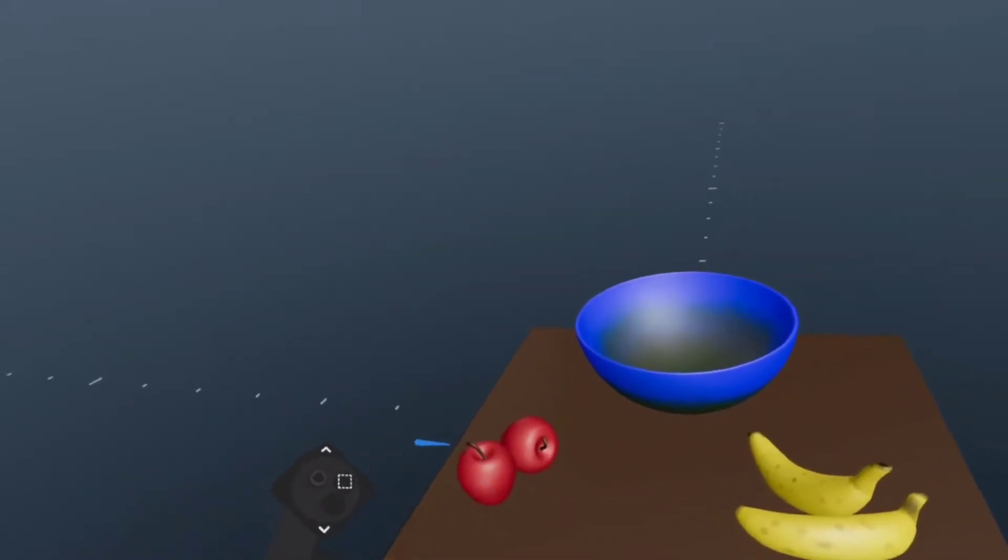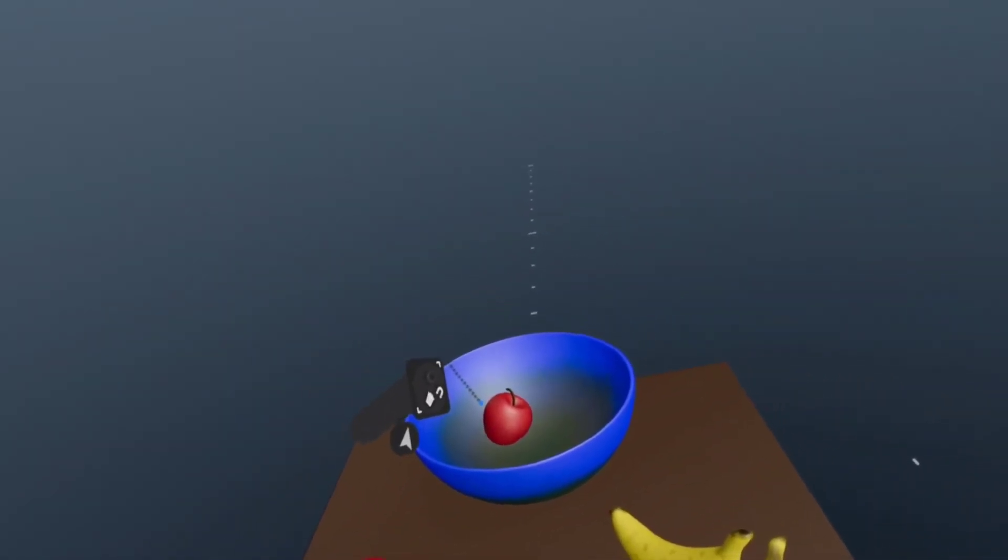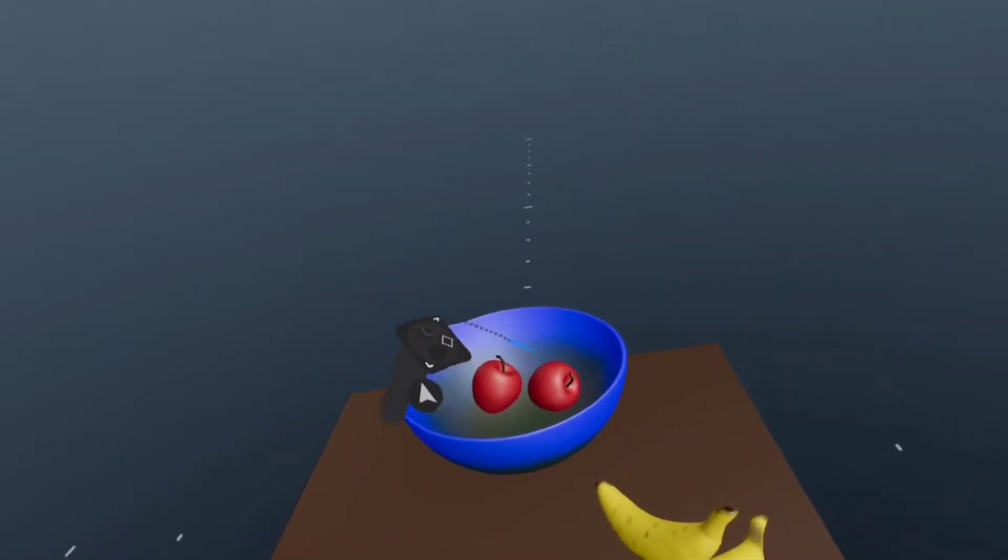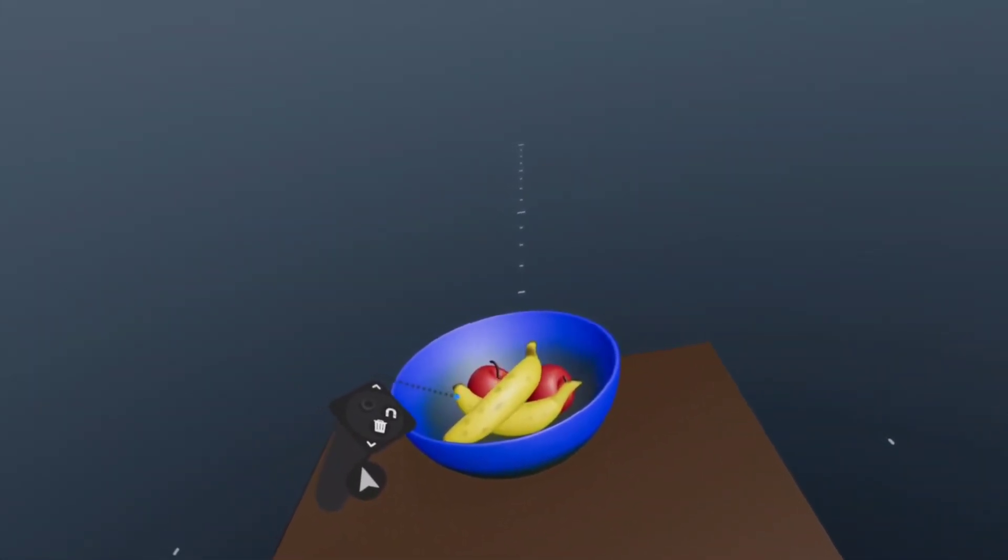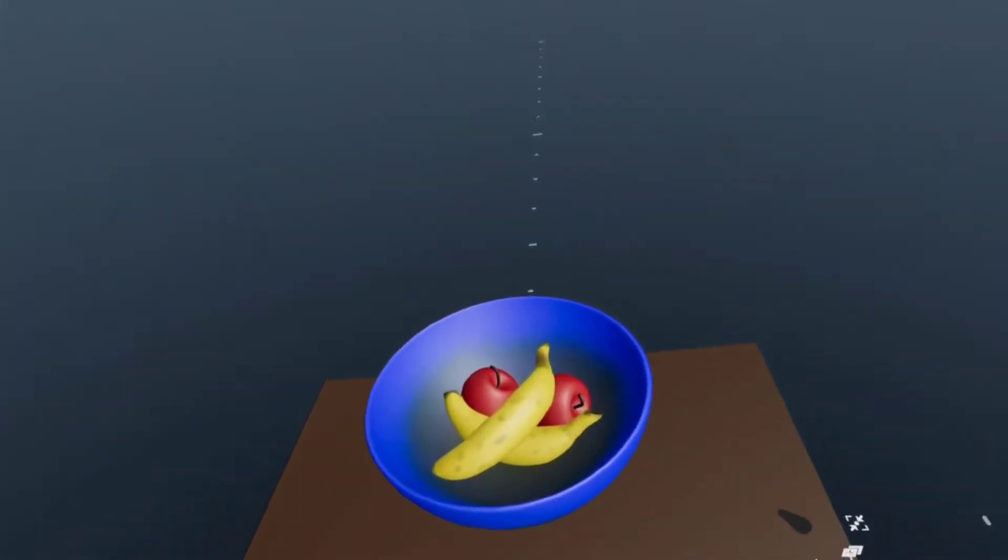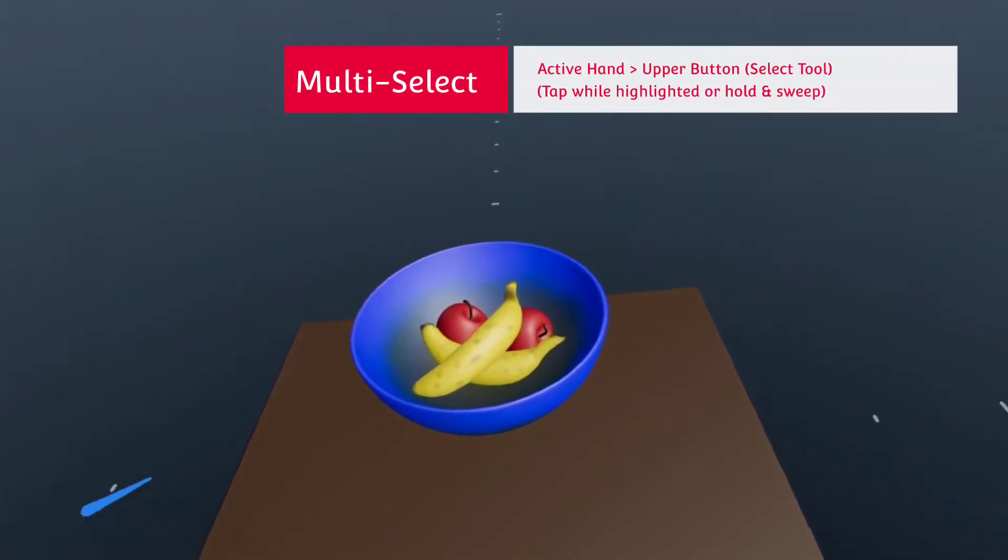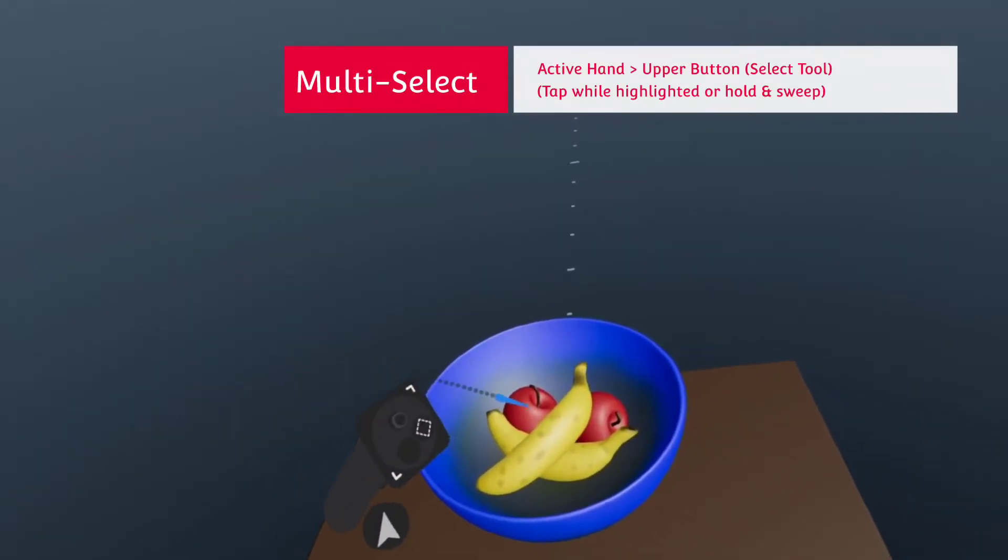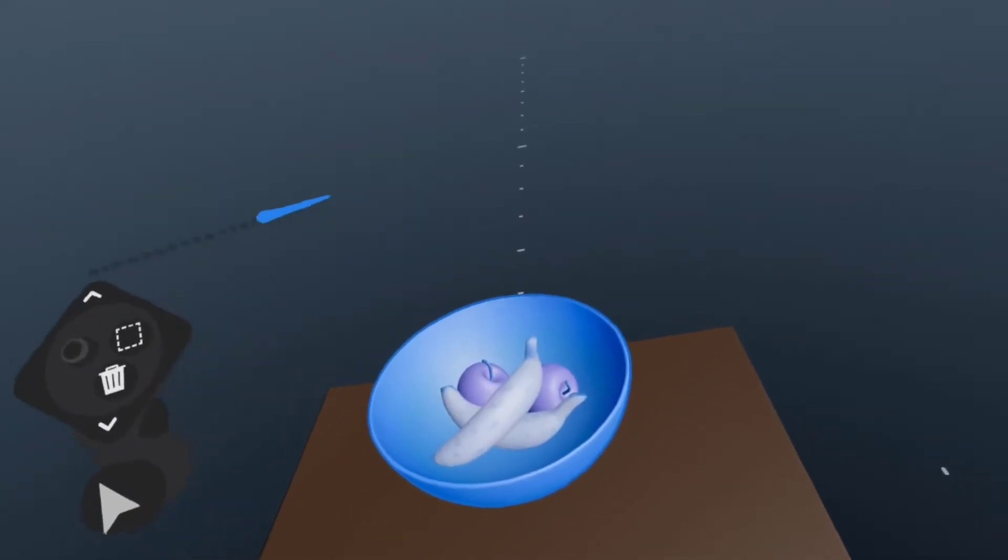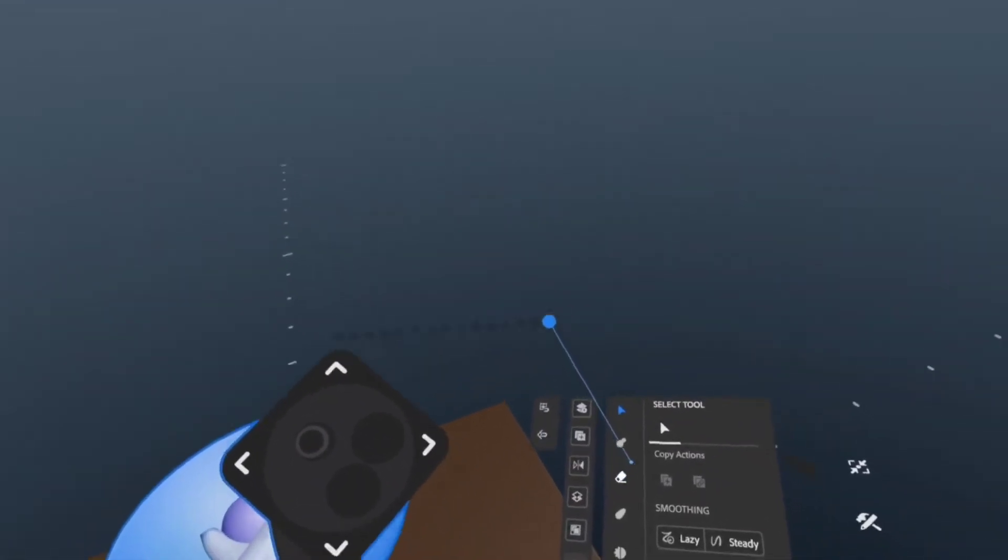So what you can do is take these objects and individually move them into the bowl. That is my very, very high tech, very nice fruit bowl arrangement. So now with that same logic, you can hold this button down, select these, and also select the bowl, and then open your pop-up menu.